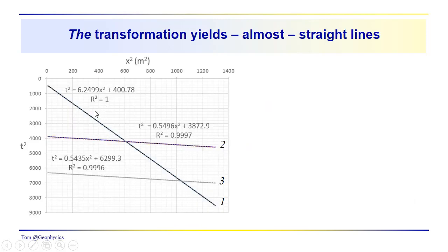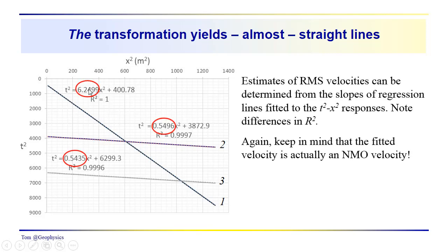Now if we take a look at the trend lines for reflection event 1, 2, and 3, we have these t squared x squared trend lines. Notice that I've also included the coefficient of determination, the R squared here. You can see that for the first reflector, as we mentioned, the fit is going to be perfect. The RMS velocity is going to be equal to the actual velocity, the actual interval velocity in this layer. So we have this term which is the slope, and I've kind of reversed the order here. This is our T0 squared, this is our 1 over V RMS squared.